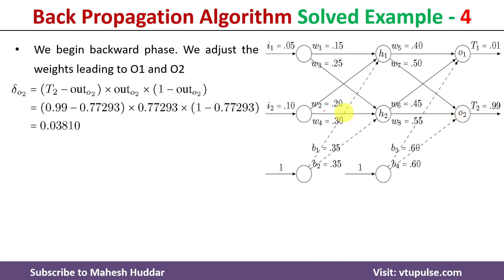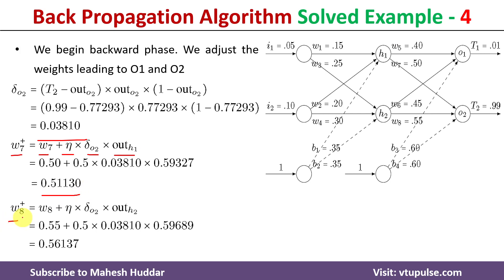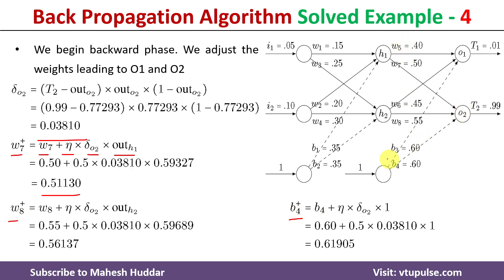Similarly, we calculate δ_o2 = (t2 − out_o2) · out_o2 · (1 − out_o2), substituting all values to get δ_o2. Using this, we update: w7 = w7 + η·δ_o2·out_h1 = 0.51130; w8 and b4 are calculated similarly. This completes the weight updates with respect to the output layer neurons.